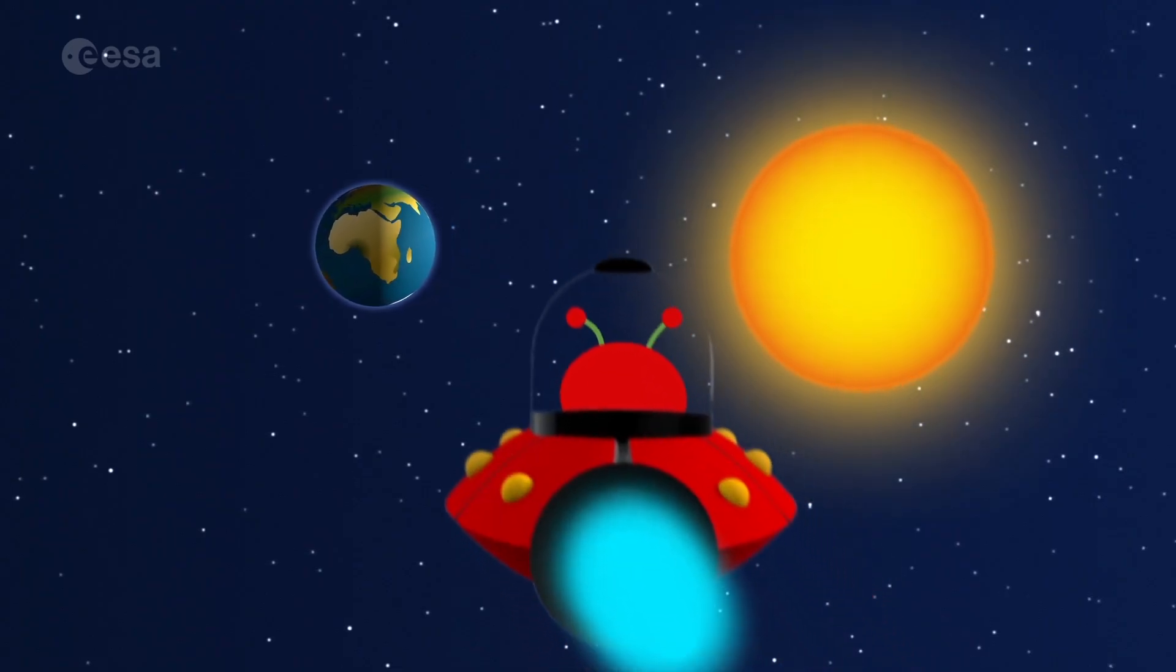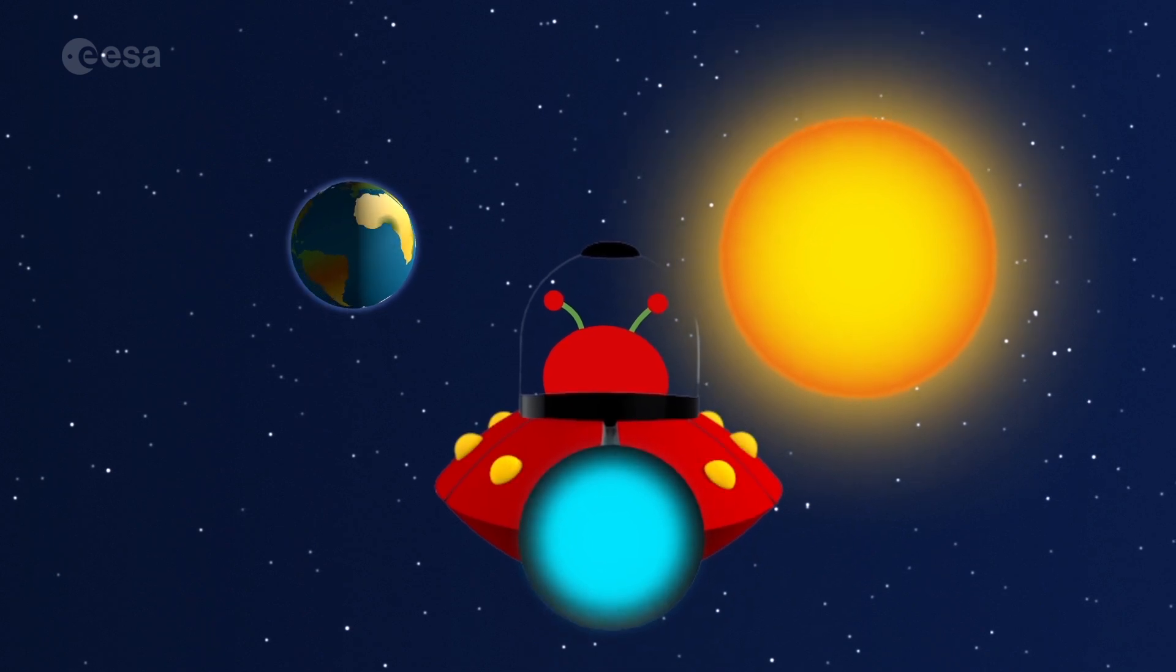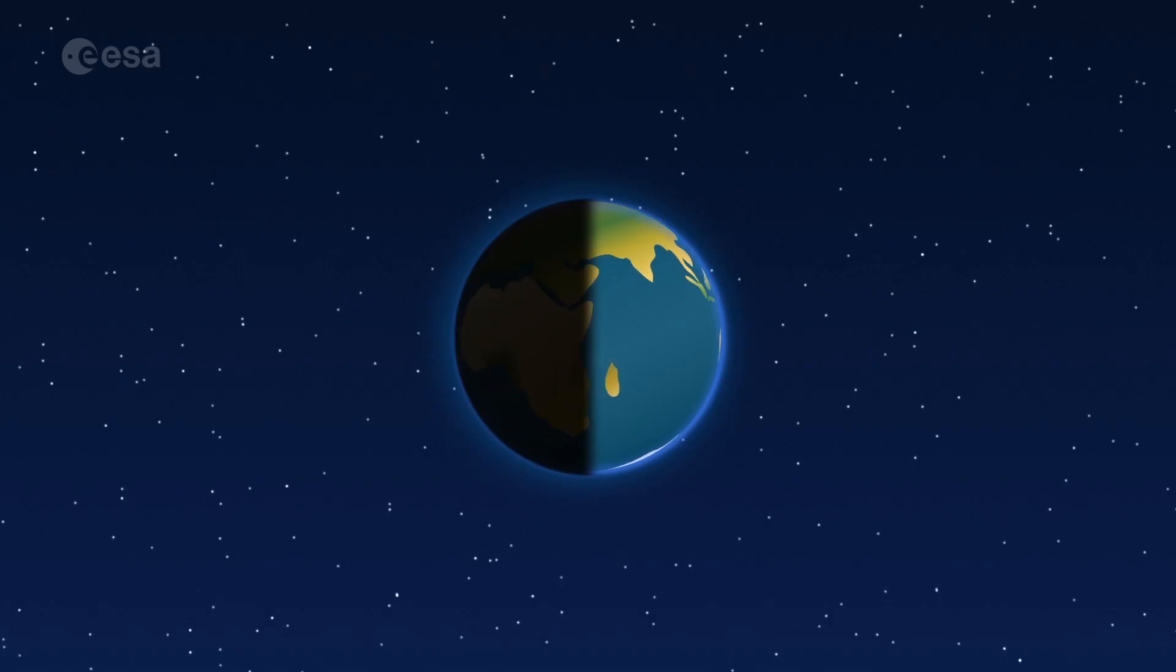From space, we can see that the Earth is spinning. It's daytime for the side that is facing the sun. On the other side, it's nighttime.